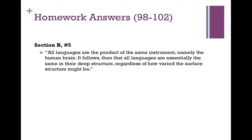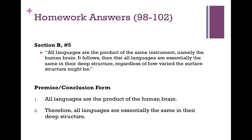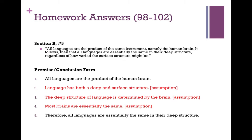All languages are the product of the same instrument, namely the human brain. It follows, then, that all languages are essentially the same in their deep structure, regardless of how varied the surface structure might be. The basic argument is: all languages are the product of the brain, therefore all languages are essentially the same in their deep structure. But this argument is making a number of assumptions. Here's one way you might try to reconstruct this argument.